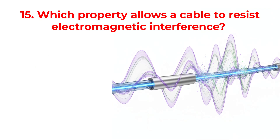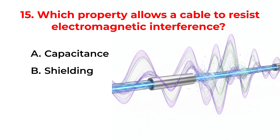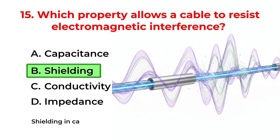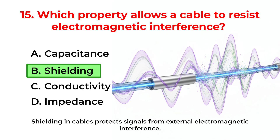Which property allows a cable to resist electromagnetic interference? A. Capacitance. B. Shielding. C. Conductivity. D. Impedance. The correct answer is Option B: Shielding. Shielding in cables protects signals from external electromagnetic interference.